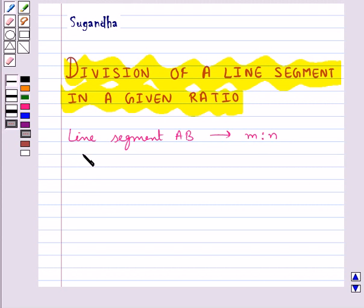Let's take the line segment AB of any length and we have to divide this in the ratio 3 is to 2.